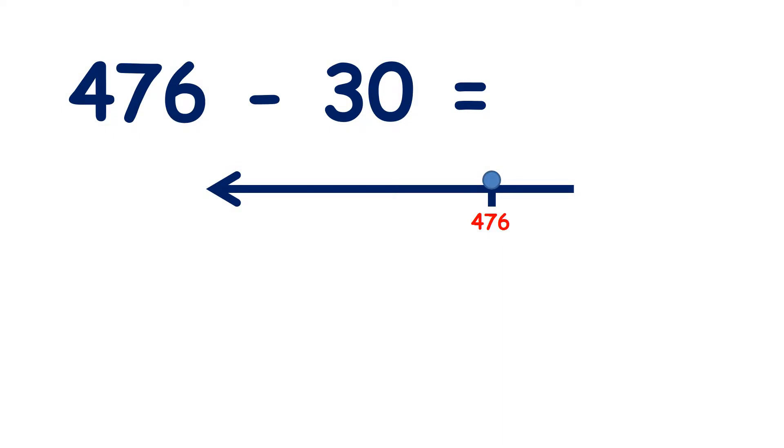We have 476 minus 30. So let's count back three tens from 476. 466, 456, 446. So 476 minus 30 equals 446.